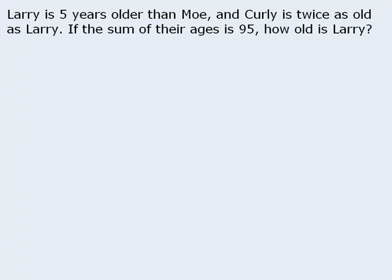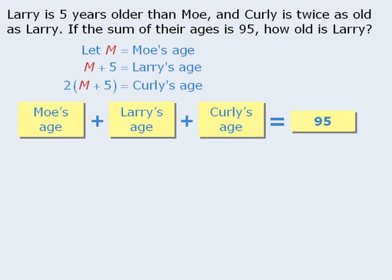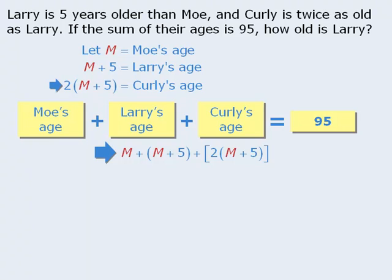One technique is to begin with a word equation. The question tells us that the sum of their ages is 95, so we can write the word equation: Moe's age plus Larry's age plus Curly's age equals 95. Now let's take the variable expressions we assigned to the ages in the last lesson and write an equation: m plus (m + 5) plus 2(m + 5) equals 95.